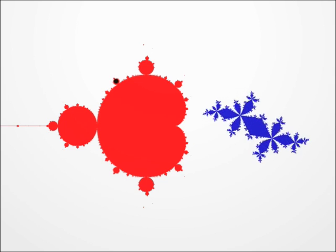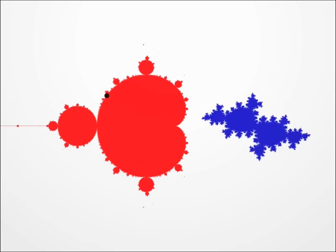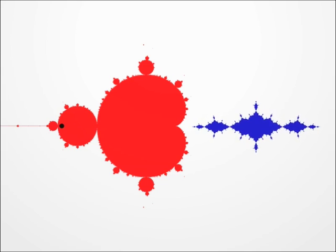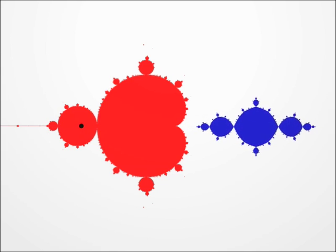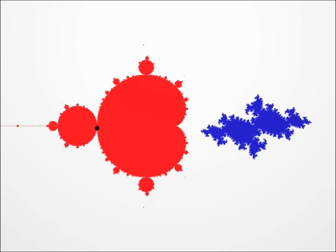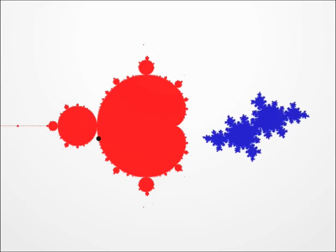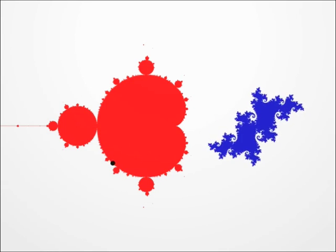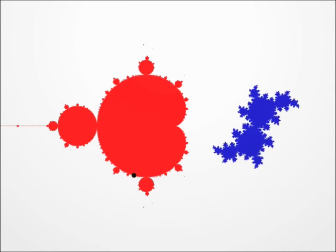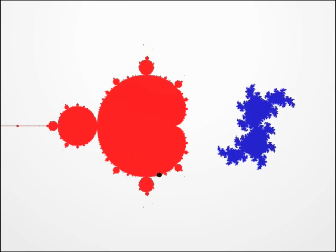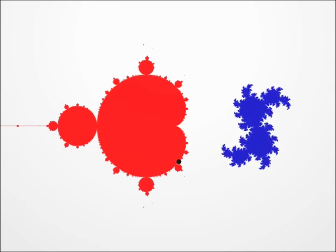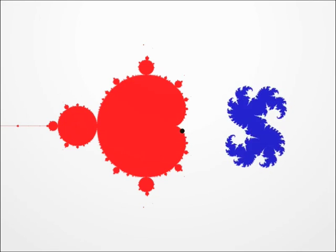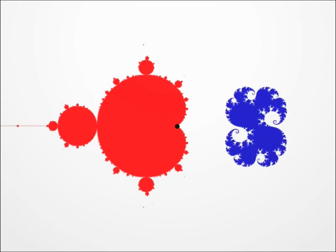Benoit Mandelbrot, who popularised fractal sets, suggested the study of this set drawn in red that describes the values of C for which one can see the Julia set clearly on the screen — in other words, those for which the Julia set did not blow up into multiple pieces. Of course, this red set is called the Mandelbrot set, and I spent quite a lot of time studying it.